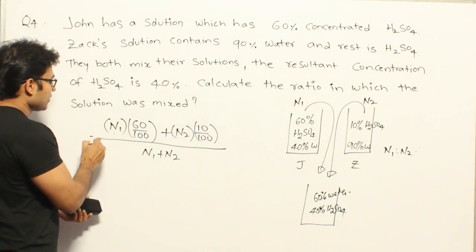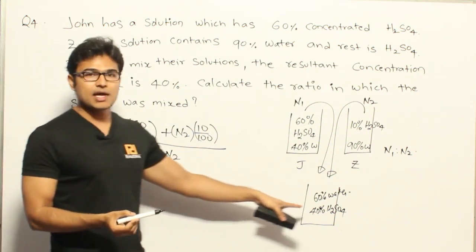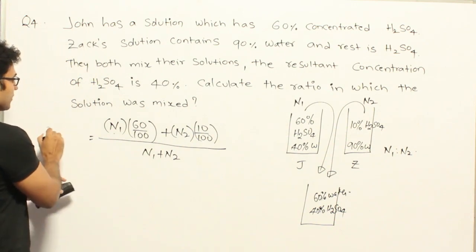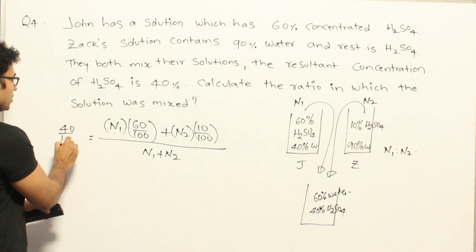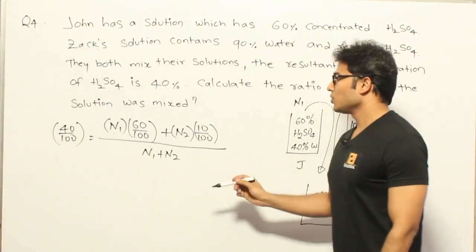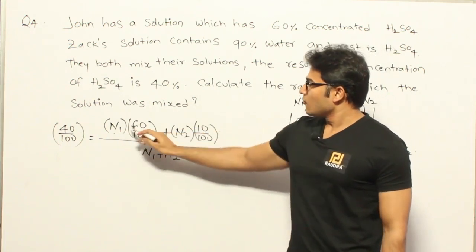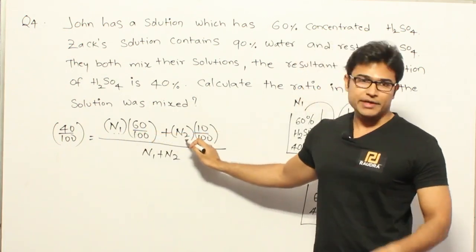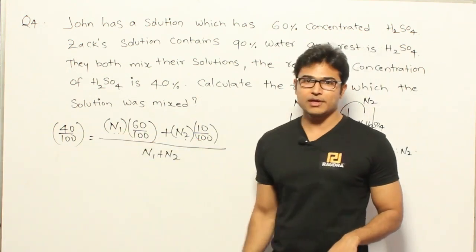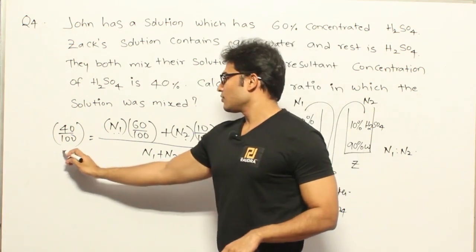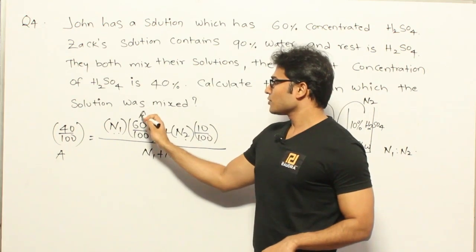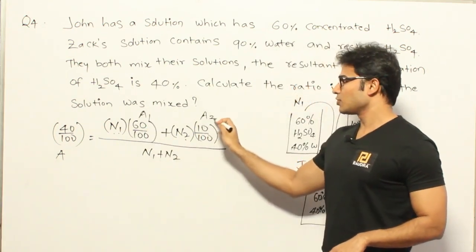The final concentration has to be 40%, which means the total H2SO4 divided by the total liquid (N1 + N2) equals 40/100. So: [(60/100)×N1 + (10/100)×N2] / (N1 + N2) = 40/100. This is exactly in the allegations formula form, where you can compare the final average to the average of one group and the average of the other group.